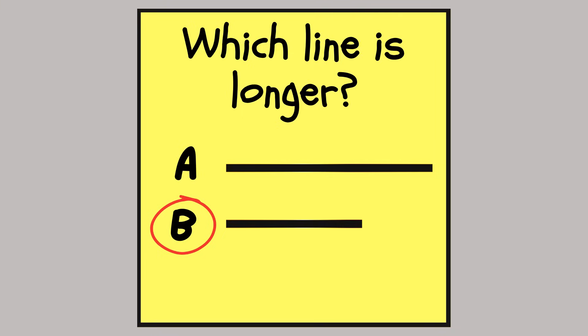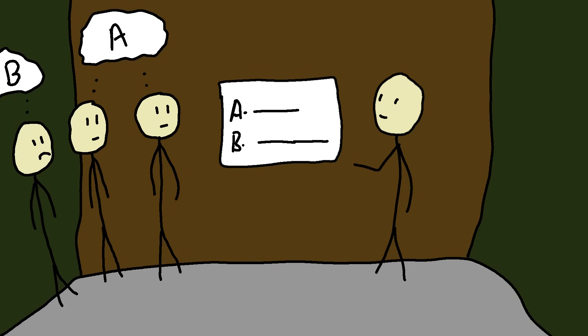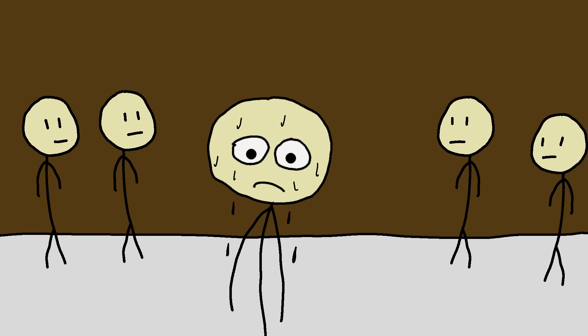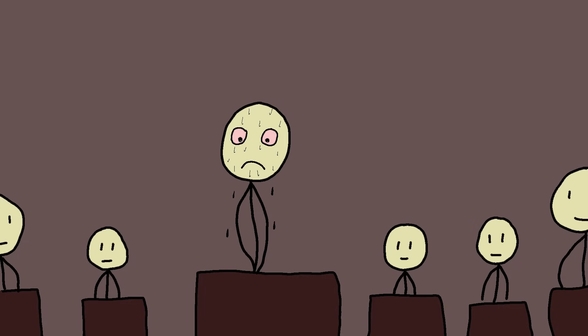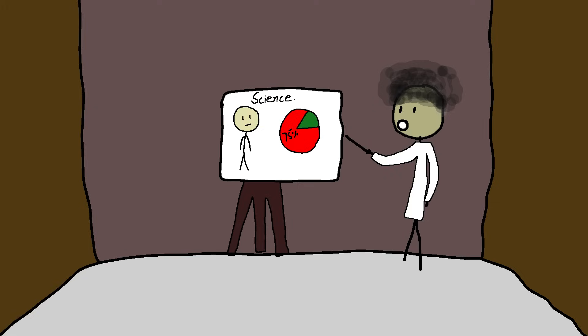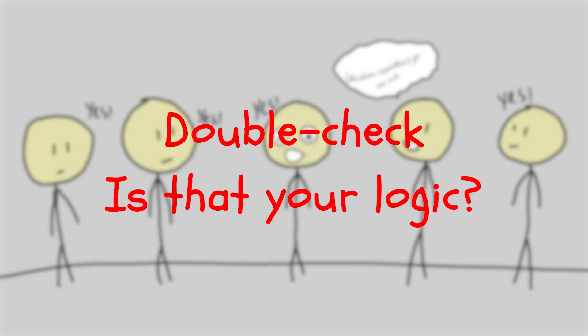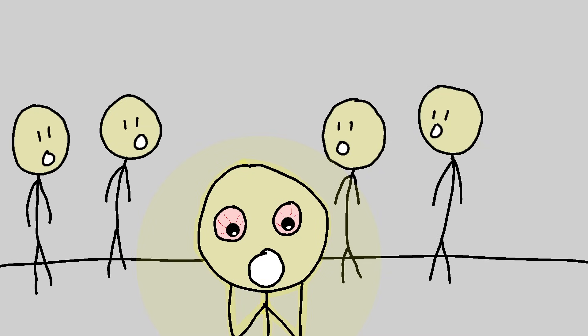Welcome to the conformity glitch, where your brain knows the answer but doesn't want to be the weirdo. It's not about sight. It's about fear, fear of standing out, fear of raising your hand and getting it wrong. Science says 75% of people will give the wrong answer just to blend in. So next time you agree with a terrible opinion, double check. Is that your logic? Or your survival instinct trying to avoid a group chat awkwardness?